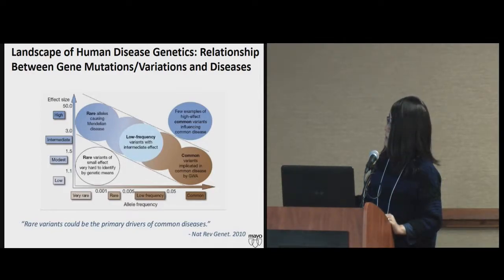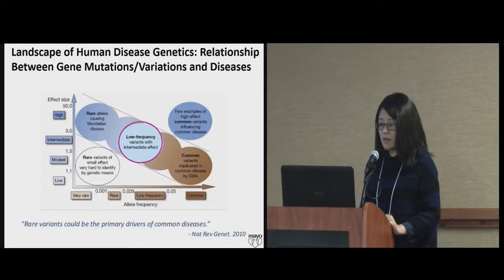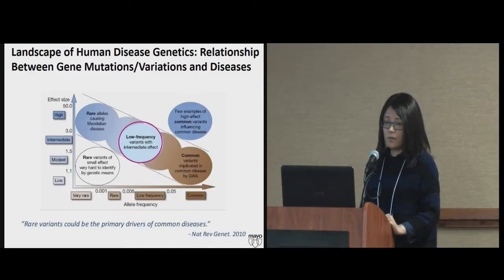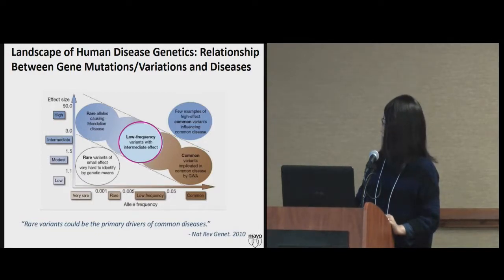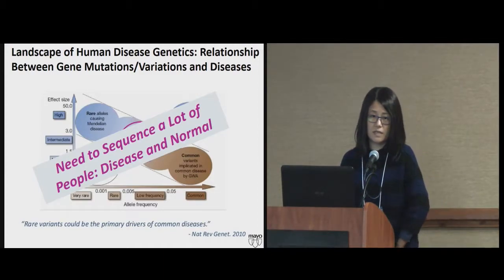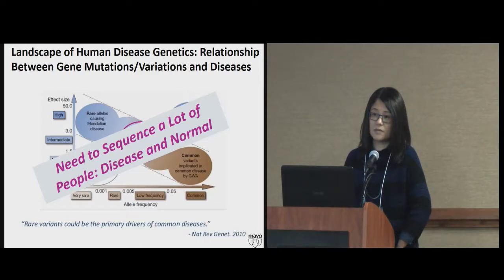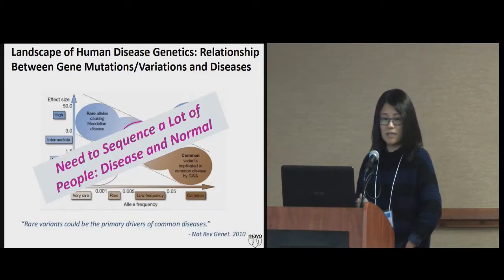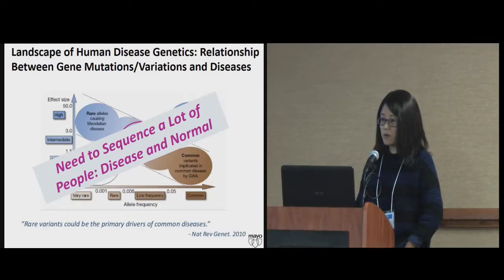Today what we're looking at is in the middle: low-frequency variants with intermediate effects, usually somewhere between 0.01% to 1% frequency. Because of that, you really need to sequence a lot of individuals to find these variants. If the frequency in the population is 0.1%, you sequence 1,000 individuals and find one with it. That's where things get really messy — we don't have enough computational power or money to sequence that many people, but people are doing it nonetheless.